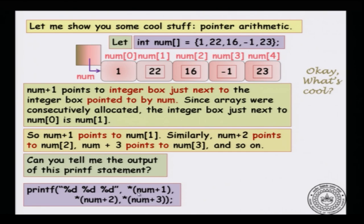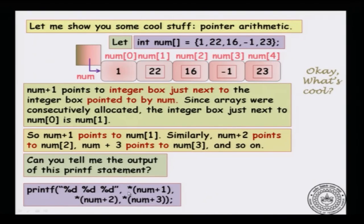num plus 1 is the address of the second integer box in the array. num points to the first location, therefore num plus 1 points to the second location. Star is the dereference operator on a pointer, so *(num+1) means go to that location and get the value there, which is 22.